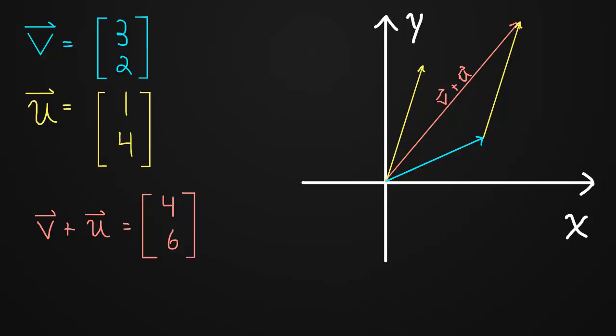Okay, what else? Well, notice that we could have, if we wanted to, gone along u first and then added v. And we would have got to the same point, which means we would have gotten the same vector. So u plus v is the same vector as v plus u.